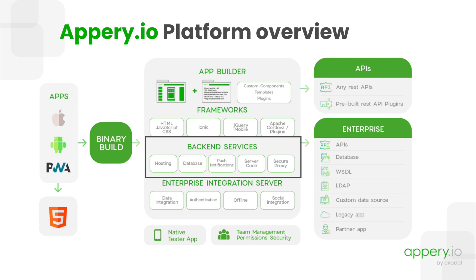The first on the list is hosting — you can host your app on the platform, get a custom URL, and a completely custom domain. The next is the Cloud Appry.io database, used for storing app data such as user records, purchases, or any app data. Our push notification service allows sending notifications to all your users, or sending targeted and scheduled notifications. Next, there is server code that allows you to write server-side logic using JavaScript — you're free to create any logic you want that will be executed on the server.